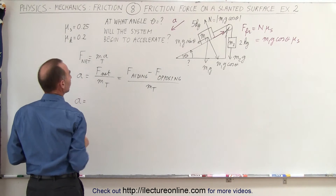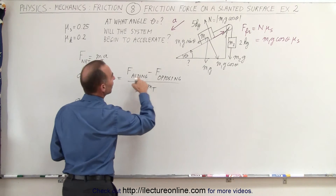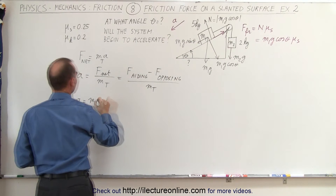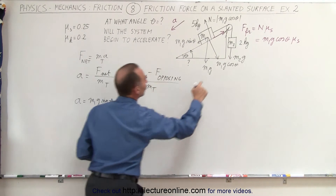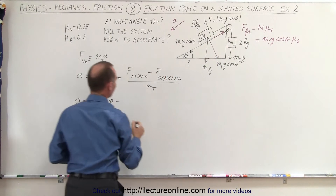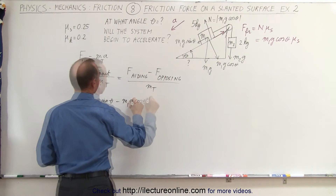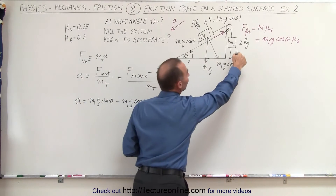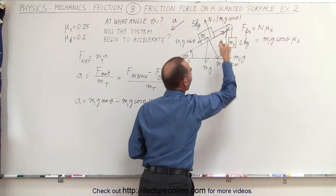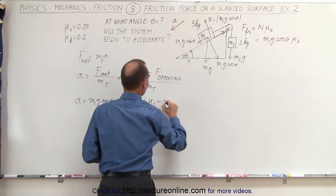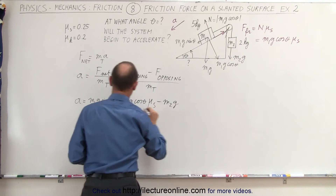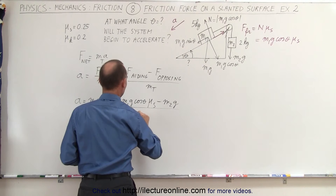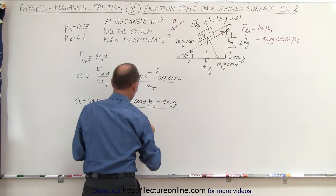So acceleration equals: the forces aiding — which is M1g sine theta — minus the forces opposing, which include the friction force and the weight of the hanging block, M2g, all divided by the total mass M1 plus M2.